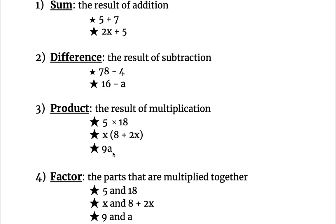Factor is the individual parts that make up the product. So the parts that are multiplied together. So for 5 times 18, that product, the factors are 5 and 18. They're the parts that make up that multiplication. For x times 8 plus 2x, the two factors are x and 8 plus 2x. So 8 plus 2x, since they're in a parentheses together, that's one factor. That whole thing is being multiplied by x. And of course with 9 times a or 9a, 9 and a are the two different factors that are being multiplied together. So they're the parts that are multiplied together.